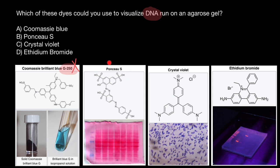Next one: Ponceau S, also known as Acid Red 112, is a sodium salt of an azo dye of light red color that may be used to prepare a stain for rapid, reversible detection of protein bands on nitrocellulose. Here you can see a nitrocellulose membrane stained with Ponceau S dye for protein detection during Western blotting. The blue bands on the left are protein markers for various molecular weights. So as you see, this is also not a dye of our choice in order to visualize DNA.